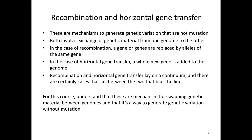The first subject is recombination or horizontal gene transfer. Both are mechanisms to generate genetic variation that are not mutation. Last lecture we talked about how random mutations arise, which changes the DNA sequence and can alter the phenotype of an organism — that's the first step of evolution. Another way to generate genetic variation is through recombination and horizontal gene transfer.